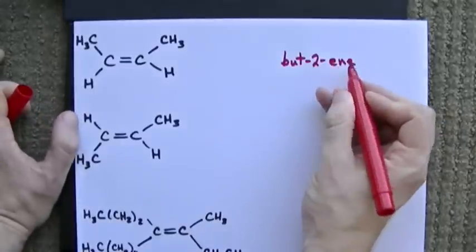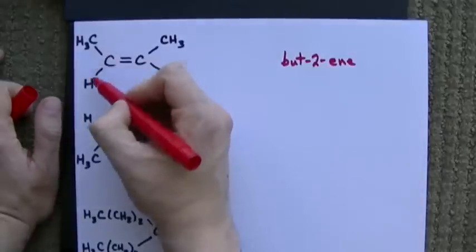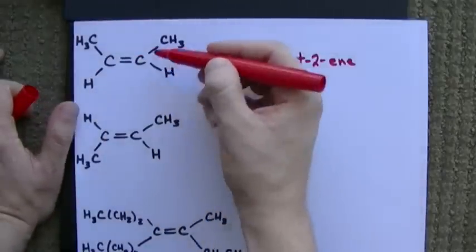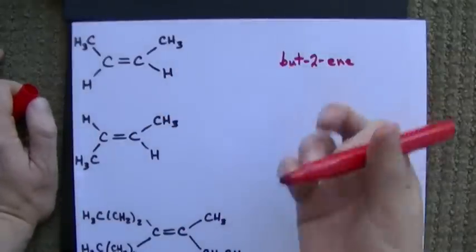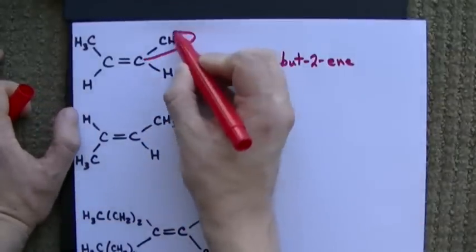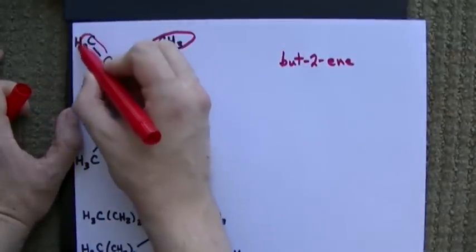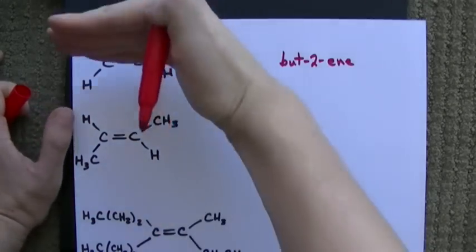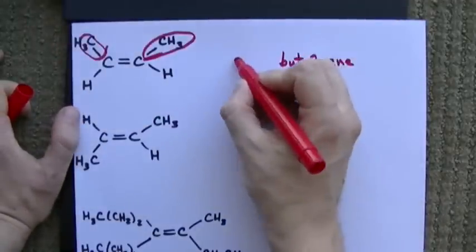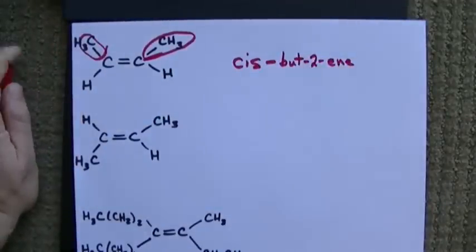But because we have an ene, and we have different things connected on each carbon, like a hydrogen and a CH3, hydrogen and CH3, we need to say whether it's cis or trans. That takes precedence, and this takes precedence. Hydrogen is often the lowest precedence anyways. These are on the same side of the double bond. This is cis-but-two-ene.